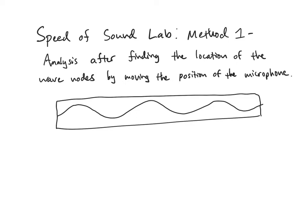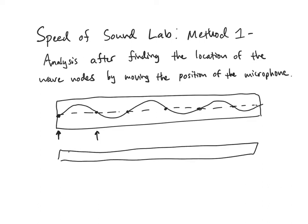As you move that microphone back and forth, you found the locations of the nodes, which were where the wave amplitude equaled zero. You should have taken note as to the location of each of these nodes on the little ruler that existed down below the tube itself.